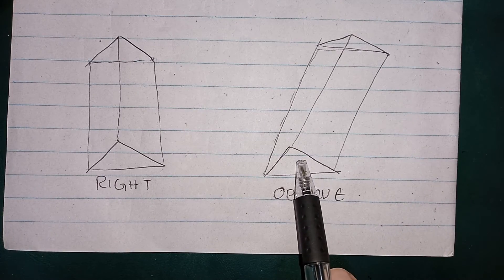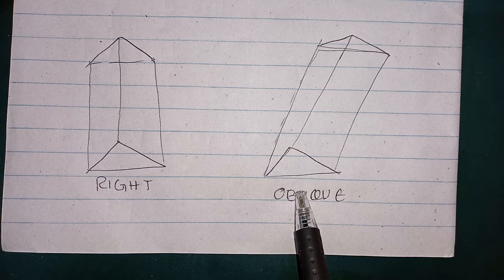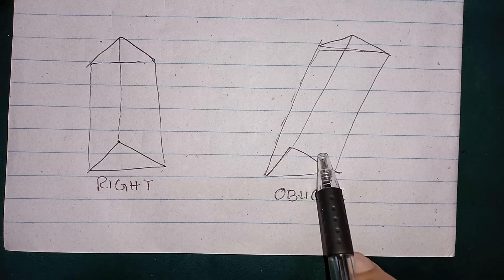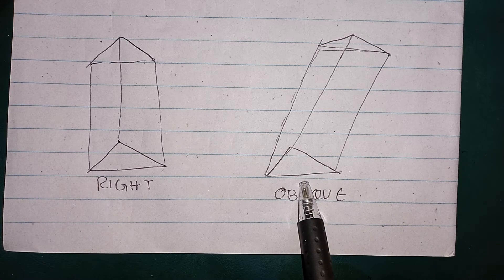But over here the bases and the lateral faces are not making 90 degree or are not at right angle. So we call this shape an oblique prism.